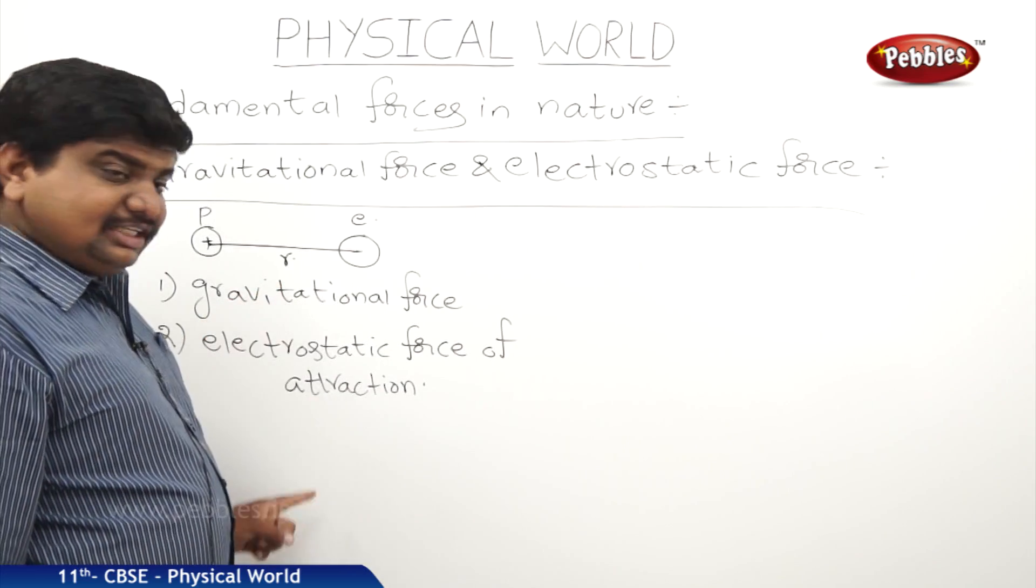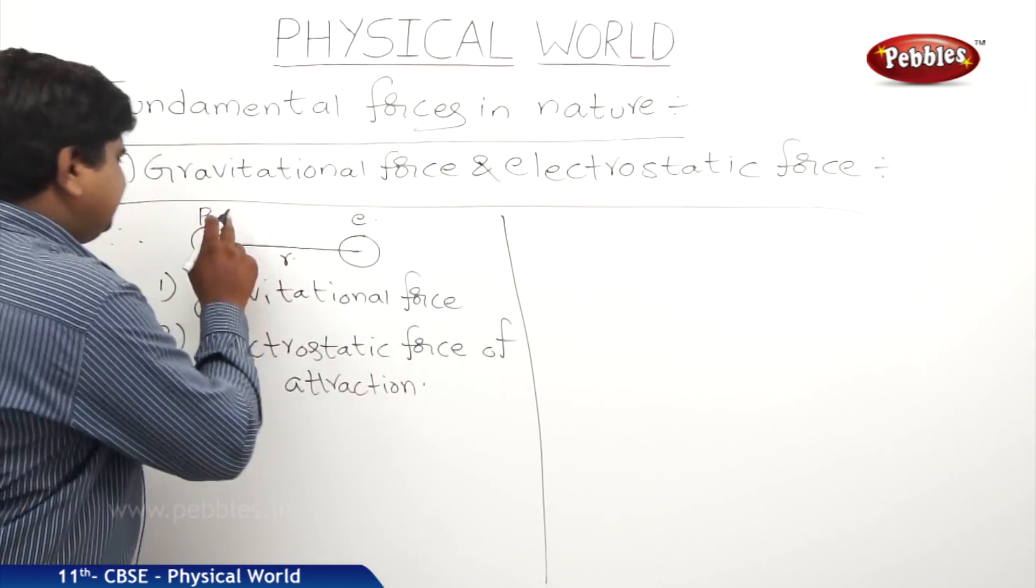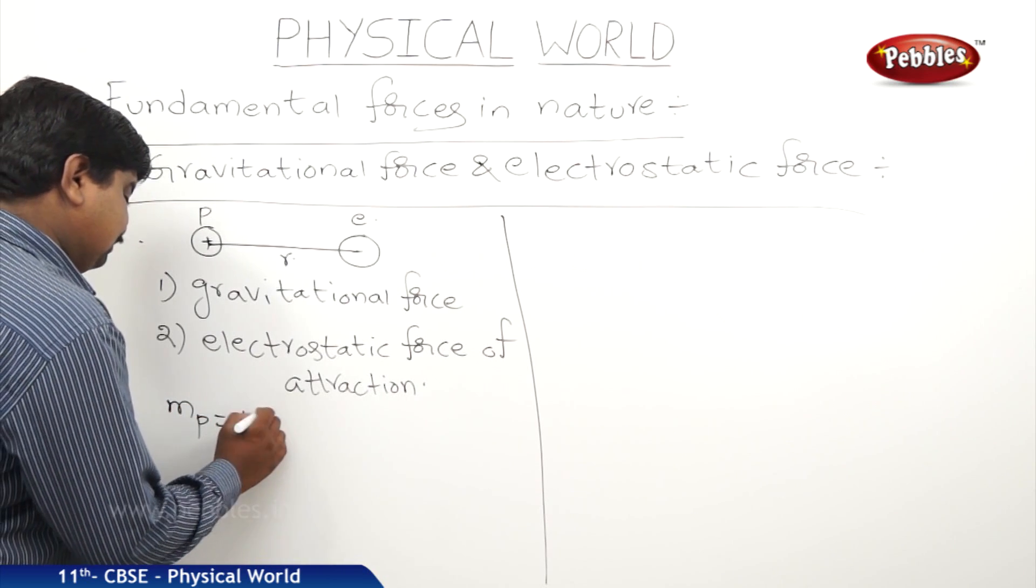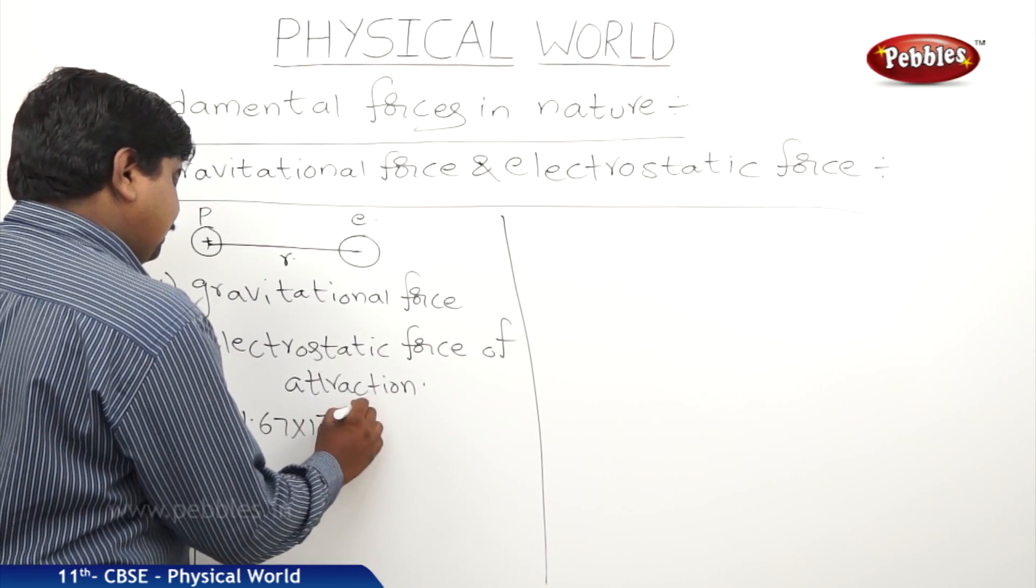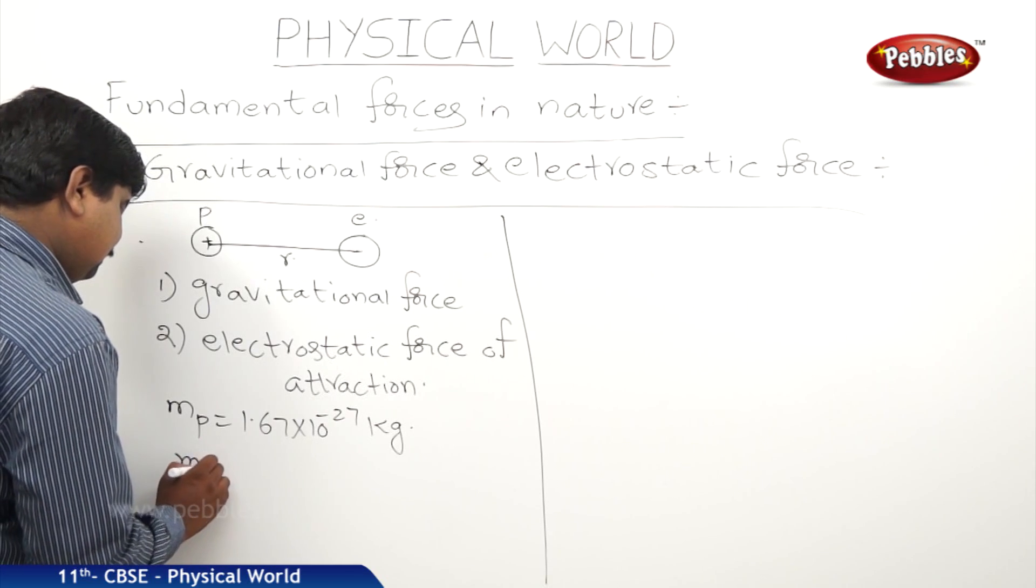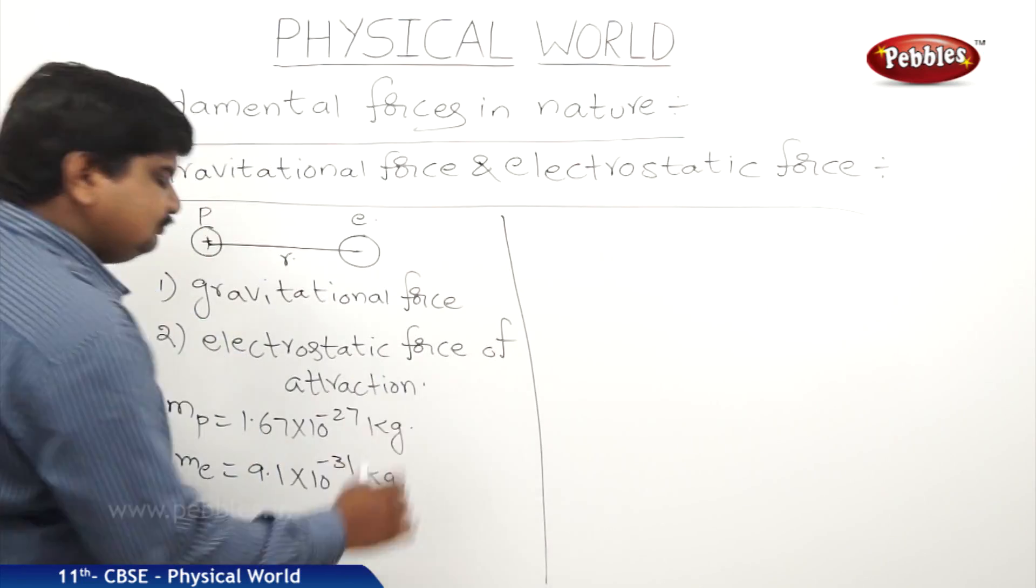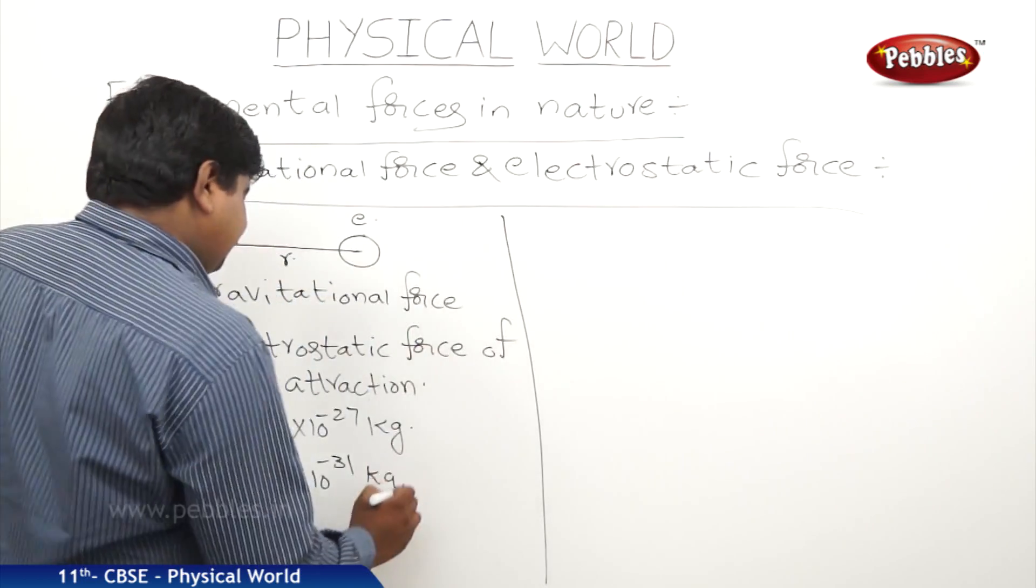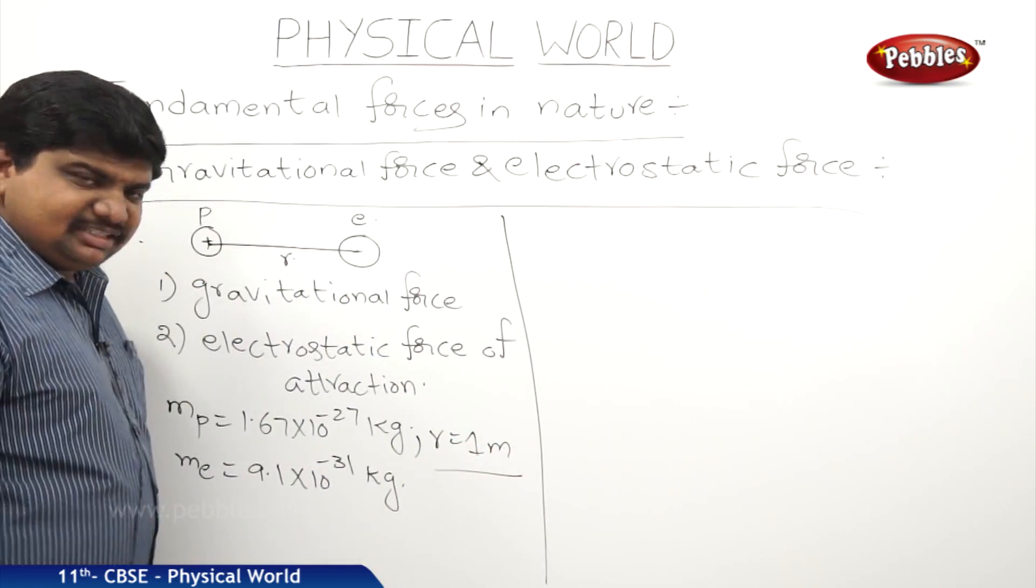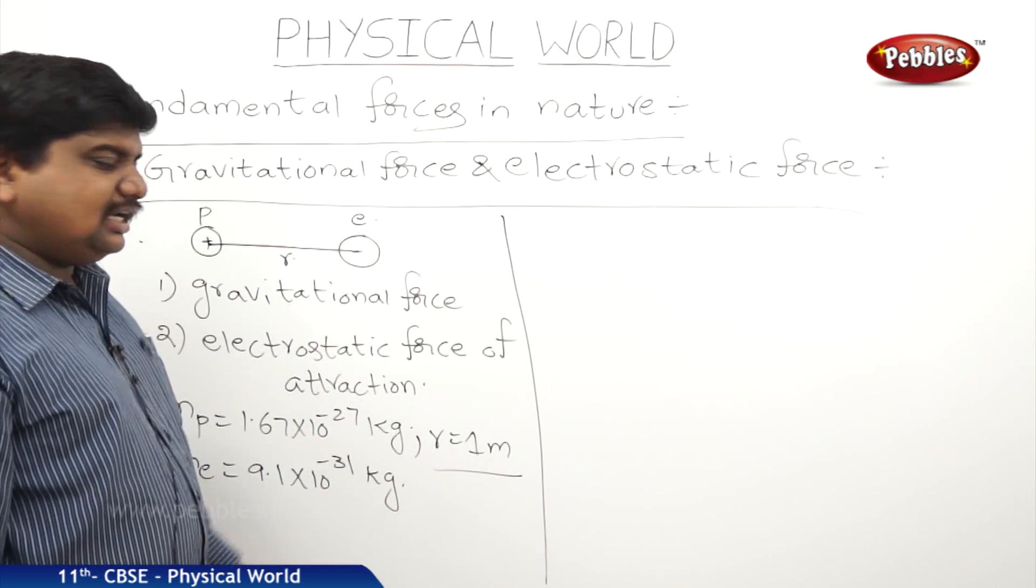Now we should relate these two forces, how they are acting on these two charges. For that purpose, let us take mass of proton MP is equal to 1.67 into 10 to the power of minus 27 kg. As well as mass of electron is 9.1 into 10 to the power of minus 31 kg. The distance between them, let us suppose r is equal to 1 meter.